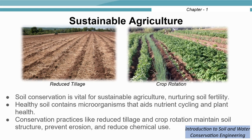Soil conservation practices play an important role in achieving sustainable agriculture. By implementing methods such as no-till farming, crop rotation, terracing, and cover cropping, farmers can prevent soil erosion, maintain soil fertility, and reduce the need for chemical inputs. These practices provide healthy, resilient soils that support high crop yields year after year while protecting the environment and reducing the carbon footprint of agriculture. Sustainable agriculture ensures long-term food security, preserves land for future generations, and mitigates the environmental impact of farming.